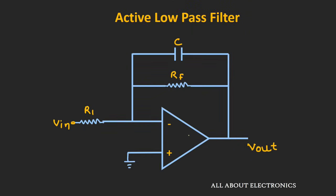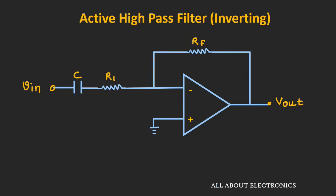So far, whatever active filters we have designed, we have provided the input at the non-inverting end of the op-amp. But we can also design these active filters by providing the input at the inverting end. If you see the active low-pass filter in the inverting configuration, the gain of the op-amp will be minus Rf by R1. So the output will be 180 degrees out of phase with the input, and the cut-off frequency fc is given by 1 divided by 2π times Rf times C. Similarly, we can design the active high-pass filter in the inverting configuration.